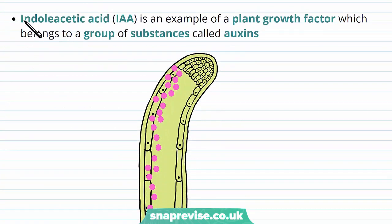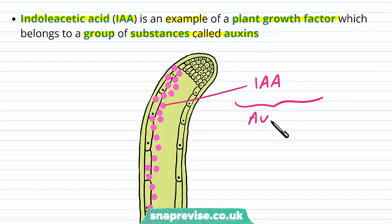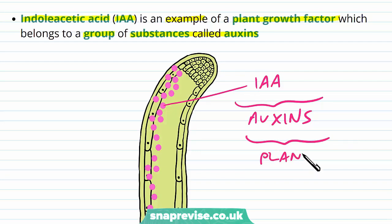One molecule called indole acetic acid, or IAA, is an example of a plant growth factor, and it belongs in a group of substances known as auxins. So IAA comes under the group of chemicals known as auxins, and these are a type of plant hormone, or plant growth factor.